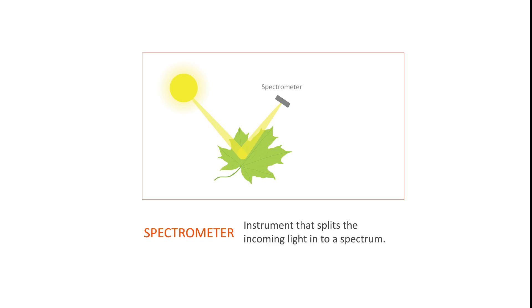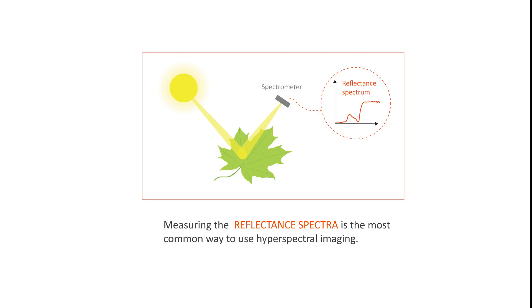In this example, the light going through a spectrometer is reflected, and the result is therefore called a reflectance spectrum. Measuring the reflectance spectra is the most common way to use hyperspectral imaging.